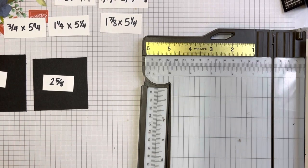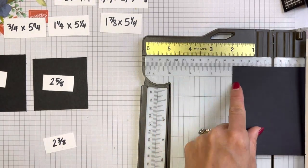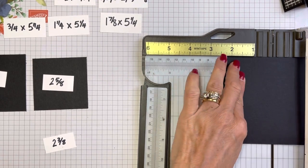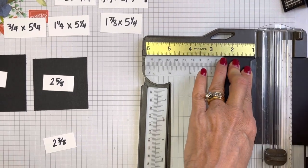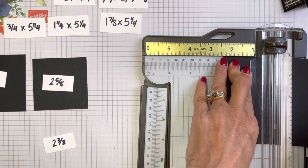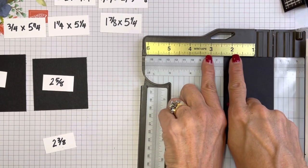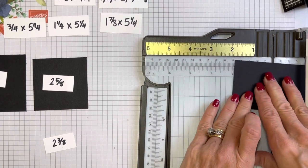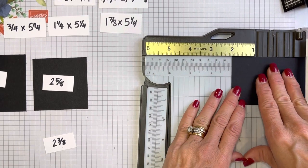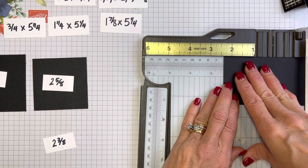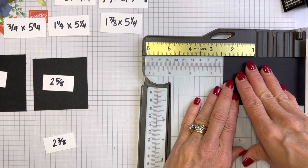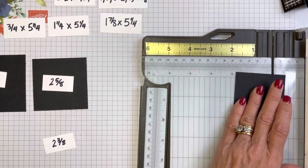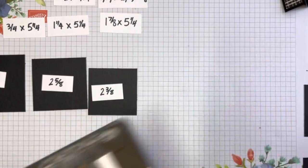Then we need another one that is 2⅝. You're going to go to 2½ and go two past that right before your ¾. Then our smallest one is 2⅜, right before the 2½. I was talking with my friend Cheryl, she goes, those eighths mess me up. Just think in between each inch mark there's 16 little ones and just count them.